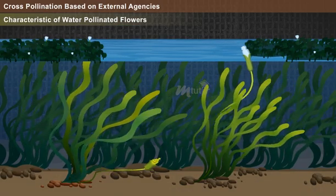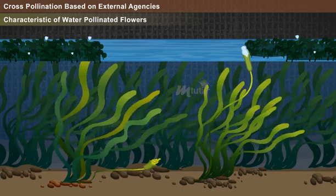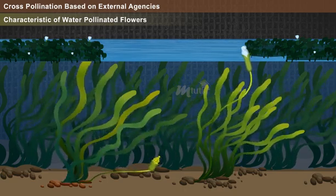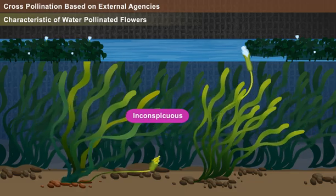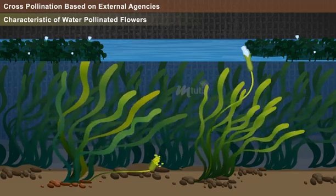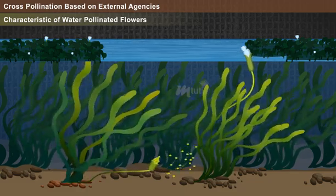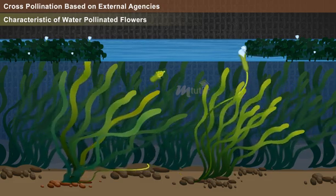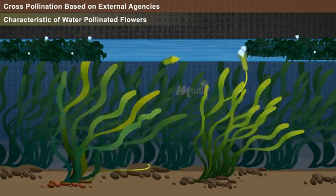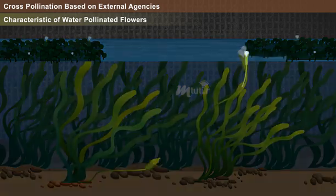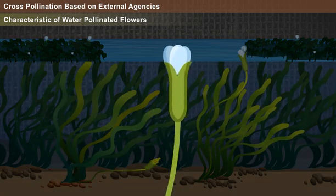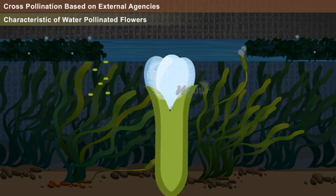Characteristics of water-pollinated flowers: water-pollinated plants generally possess small, inconspicuous male flowers which release more pollen grains into water. The male flower, after maturation, detaches from the plant and floats above the water. Usually the female flowers have long stalks, and the stigmas are long and feathery for catching the pollens.